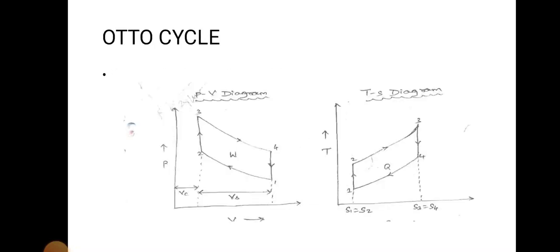There are different types of air standard cycles: the Carnot cycle, the Otto cycle (or petrol cycle), the Diesel cycle, the Dual cycle, and the Brayton cycle. In this lecture, we are going to explain the Otto cycle.